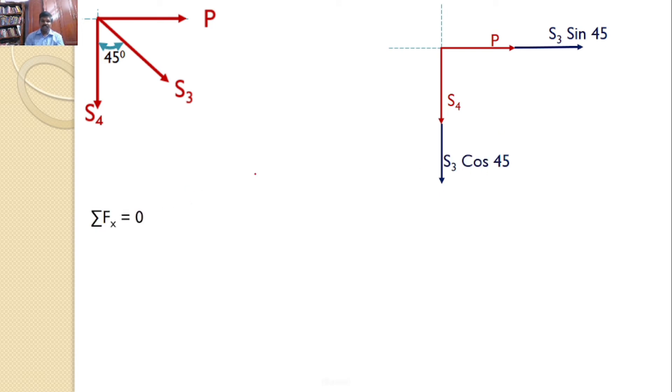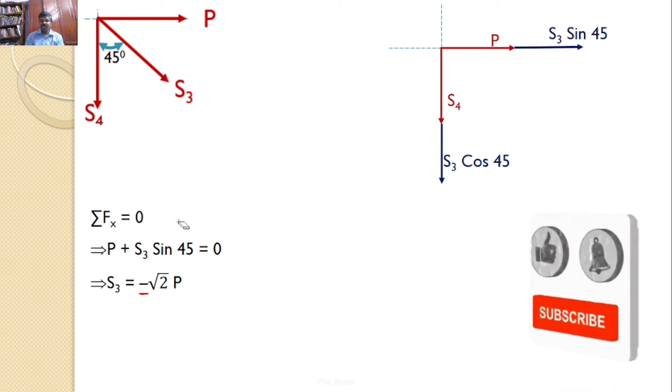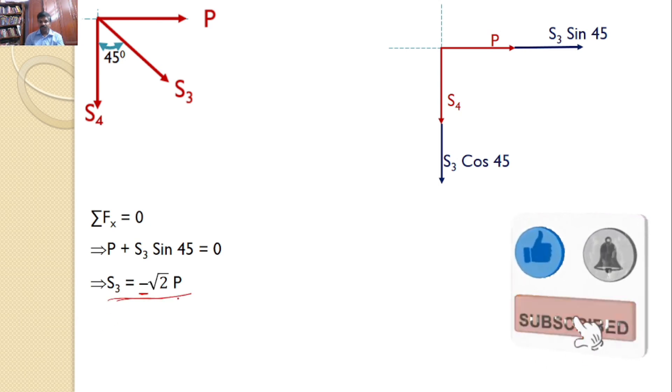Now let us apply the equilibrium condition Sigma FX equals 0. There are two forces both acting in the same direction. Hence I can write P plus S3 sin 45 equals 0. From that you can find S3 equals minus root 2 times P. The minus indicates that force in S3 is not tensile. The force in S3 is compressive.